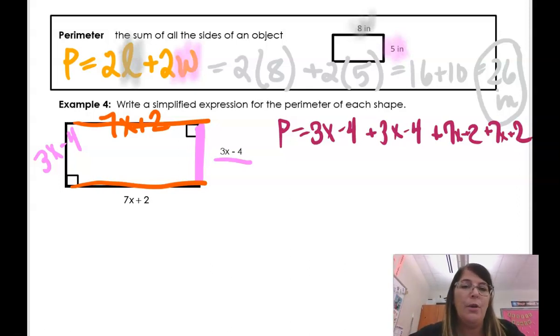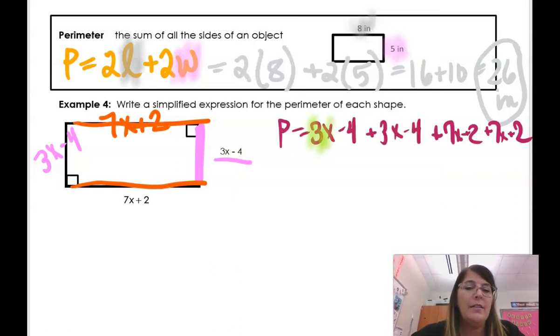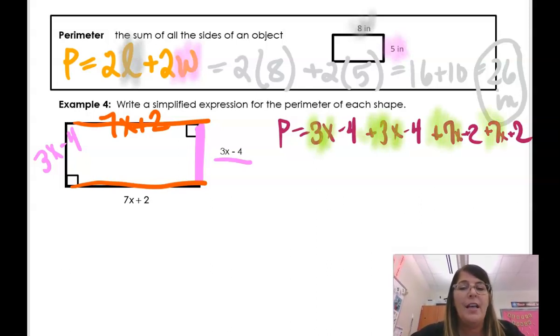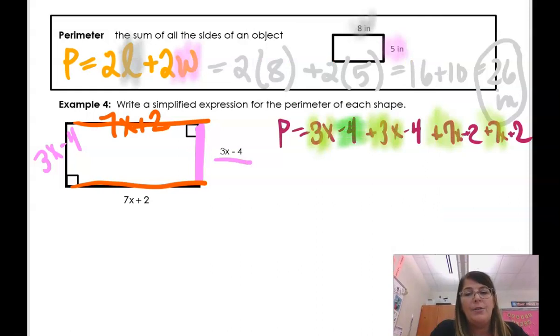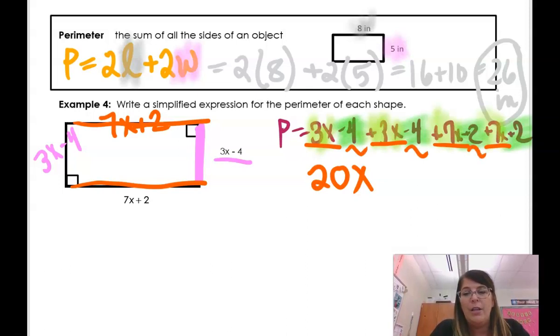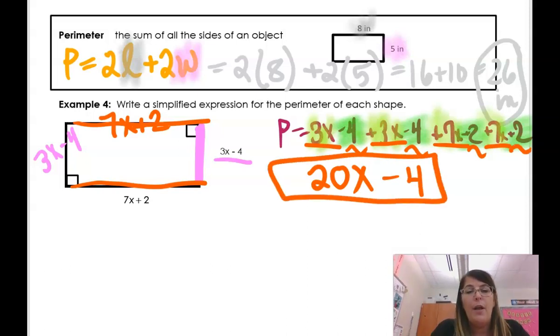So I could just say the perimeter is equal to 3x minus 4 plus 3x minus 4 plus 7x plus 2 plus 7x plus 2. I'm just adding up all the sides. Let's find our like terms we have going on here. So 3x and 3x, that's a positive 3x, and a positive 7x and a positive 7x. They are like terms. And minus 4 minus 4 plus 2 and plus 2. Those are like terms. So if I just combine all my like terms, 3, 4, 5, 6, 13, 20, that gives me 20x, negative 4, and negative 4 is negative 8, plus 2 is negative 6, plus 2 is negative 4. So my perimeter, my simplified expression for the perimeter is 20x minus 4.